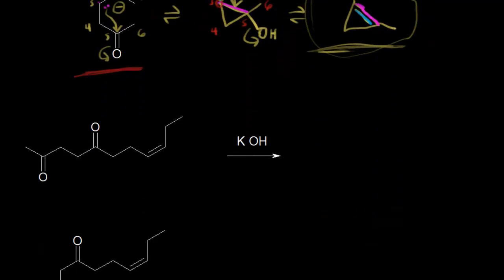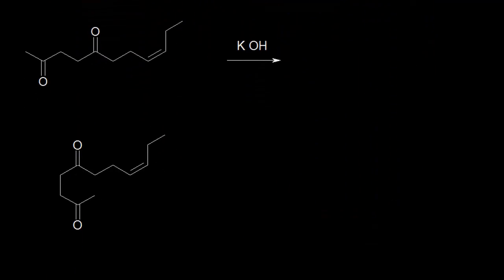Let's do one more intramolecular aldol condensation. It looks a little bit more complicated, but we can analyze it the same way. Looking for our alpha carbons — those are the ones next to our carbonyls — let's number this compound: carbon one, two, three, four, five, and six. Our alpha carbons would be carbon one, carbon three, carbon four, and carbon six — those are our possibilities.